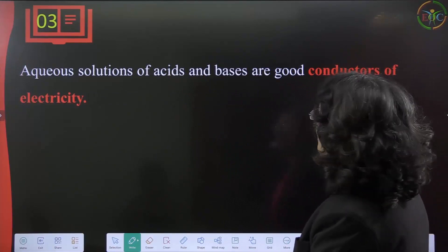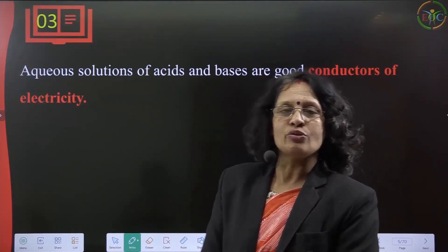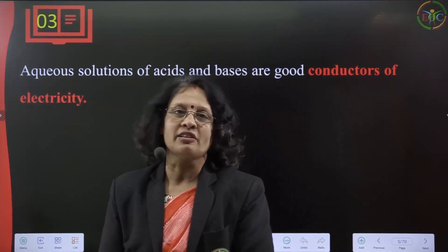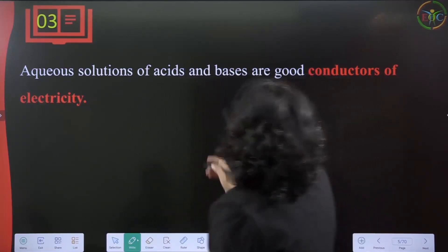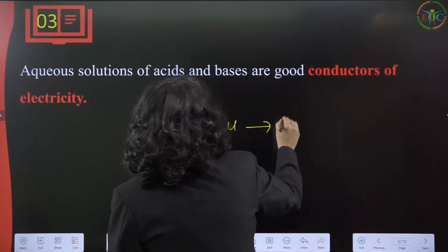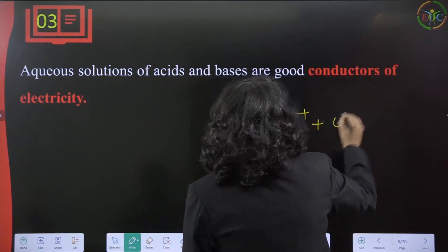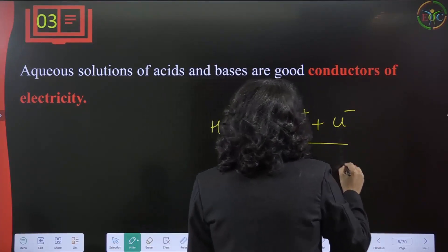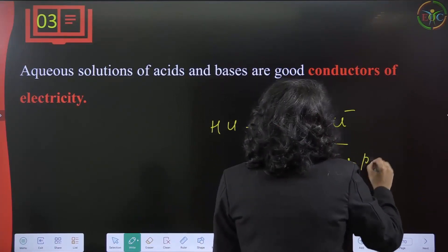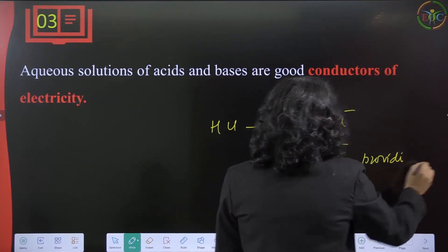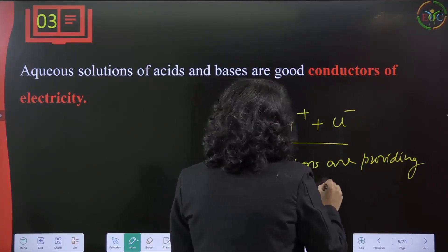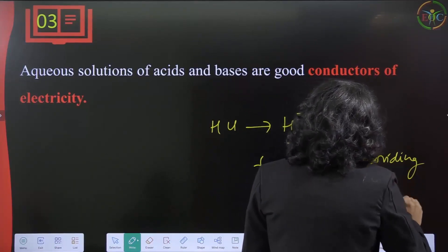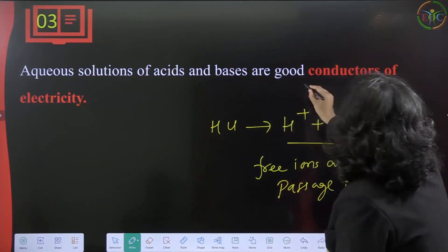Aqueous solutions of acids and bases are good conductors of electricity. When HCl is dissolved in water, it gives H⁺ and Cl⁻ ions. These free ions provide a passage for electric current, which is why they are very good conductors of electricity.